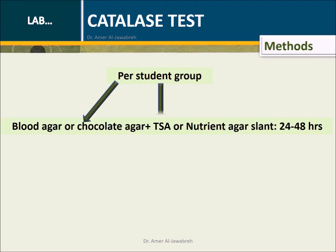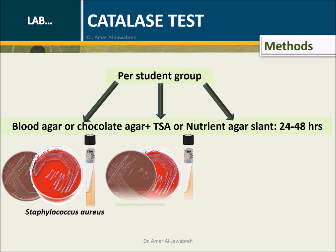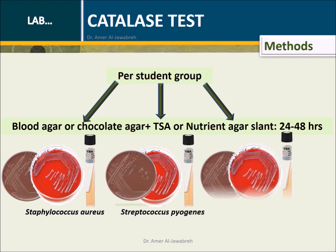Provide each student group with three culture media, either chocolate or blood agar, and three slant agars, either TSA or nutrient agar, for three bacteria: Staphylococcus aureus, Streptococcus pyogenes, and Escherichia coli.